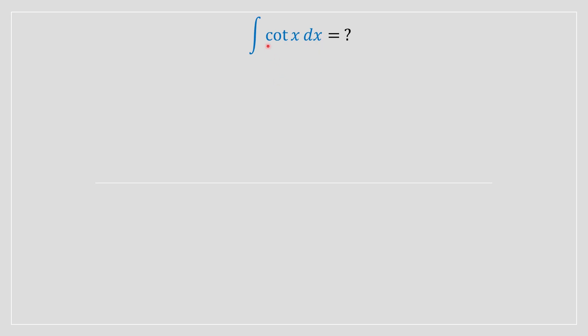The first step you need to do is rewrite the cotangent in terms of cosine and sine. We can use a trig identity to do that. We're going to rewrite it with cos(x) in the numerator and sin(x) in the denominator.